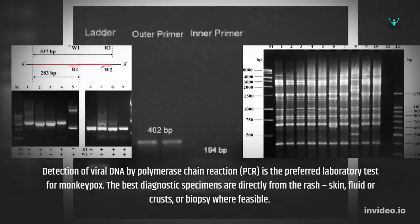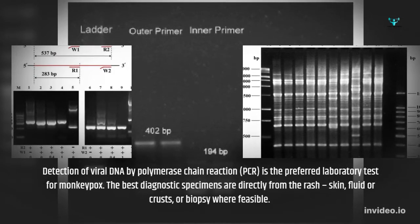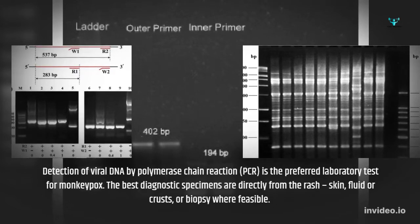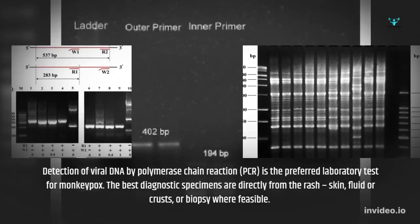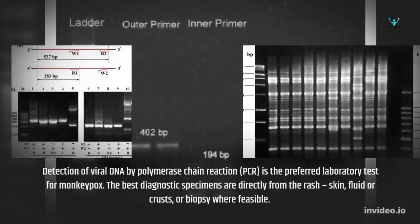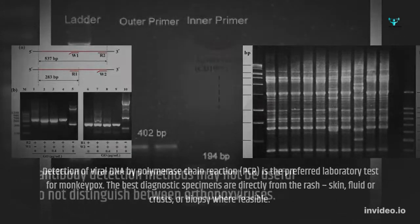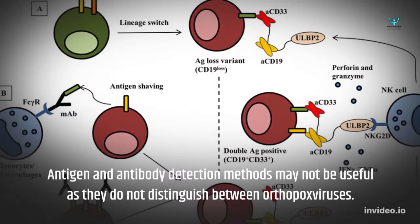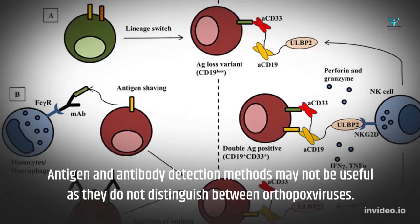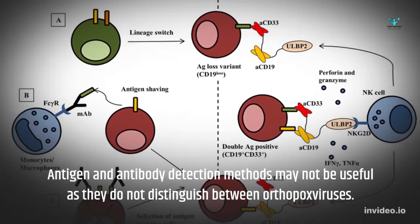Detection of viral DNA by polymerase chain reaction (PCR) is the preferred laboratory test for monkeypox. The best diagnostic specimens are taken directly from the rash — skin, fluid, or crusts — or biopsy where feasible. Antigen and antibody detection methods may not be useful as they do not distinguish between orthopoxviruses.